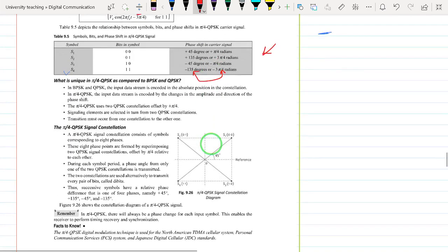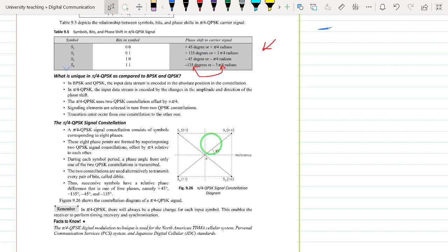We need to find out what is unique about π/4 QPSK compared to BPSK or QPSK. In BPSK or QPSK, the data stream is encoded in absolute positions. When we represent the phase of BPSK, if it is 0, we represent it with 0 degrees phase shift. If it is 1, we represent it with 180 degrees phase shift.